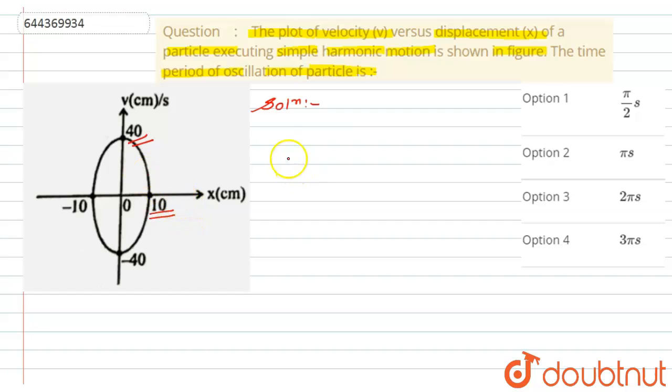So first of all we will write this thing - the v max, maximum velocity of the particle is 40 centimeter per second. If you convert in meter so this would become 0.4 meter per second. Similarly the maximum amplitude for the particle is given by A, that is A equals to 10 centimeter according to given graph. If you convert in meters so this would become 10 into 10 raised to minus 2 meter.